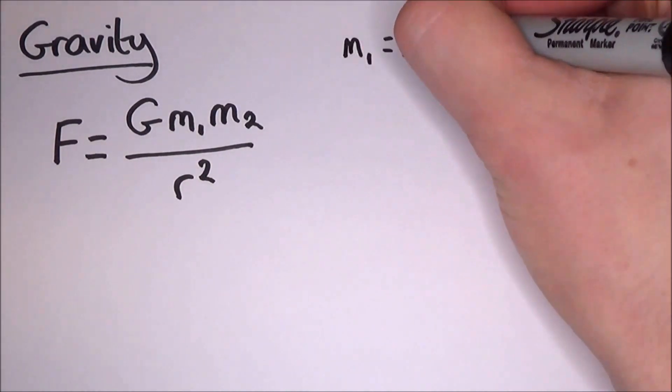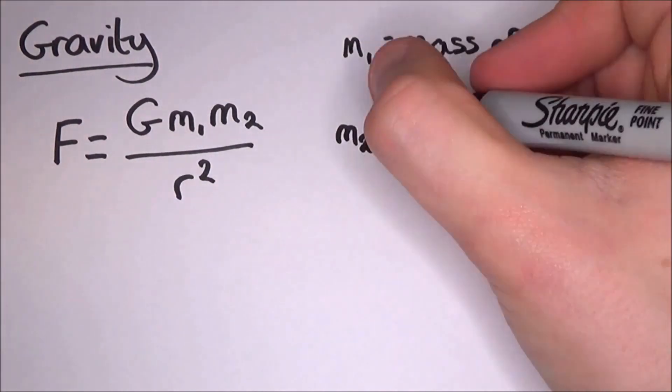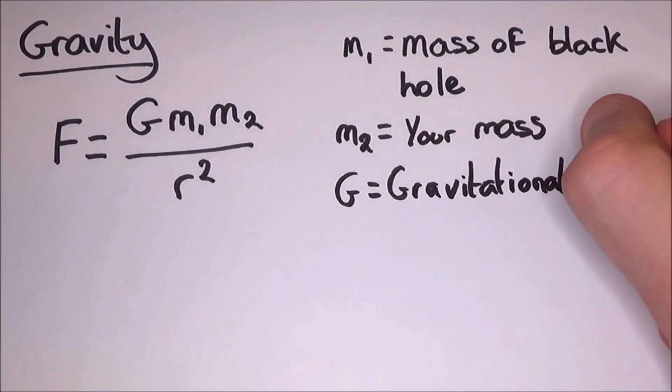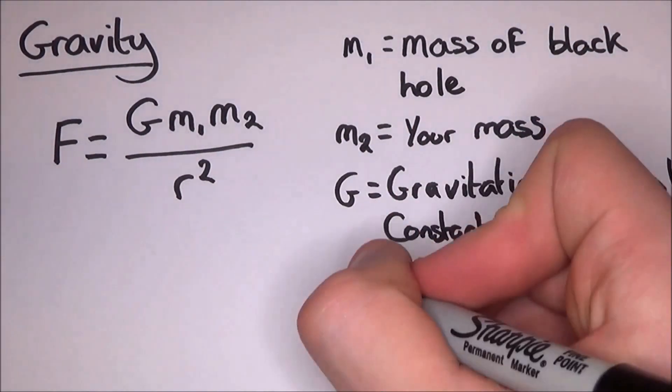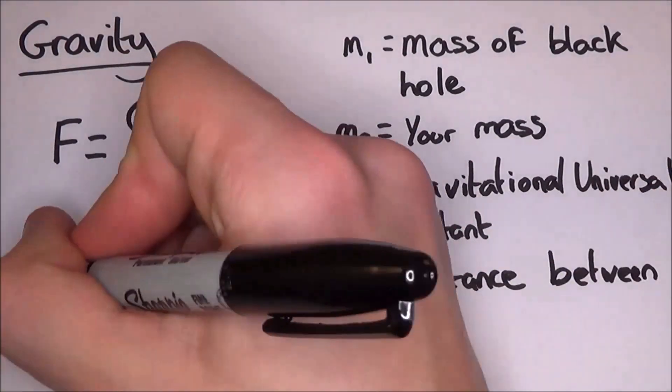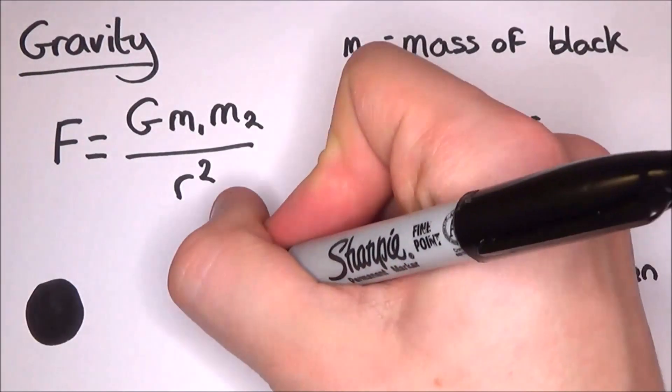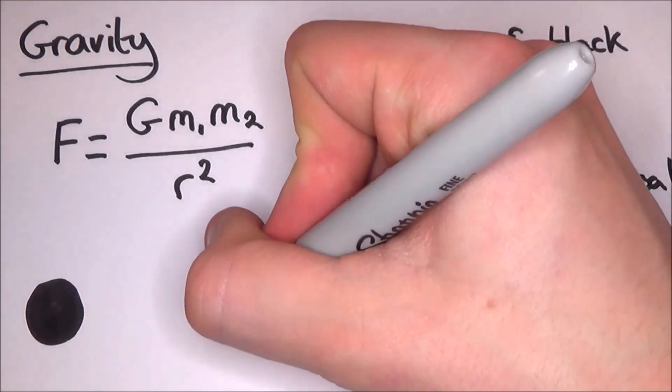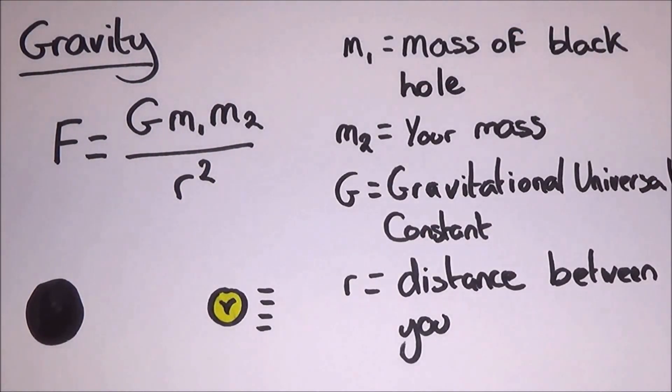So you can work out the gravity between you and a black hole with the formula F equals G, M1, M2, all over R squared. Where M1 is the mass of the black hole, M2 is your mass. Also you have G, the gravitational constant, and R is the distance between you and the black hole. But the incredible thing is, the black hole's gravity is so strong that it affects particles without mass, like photons.